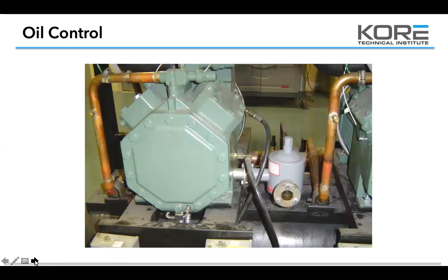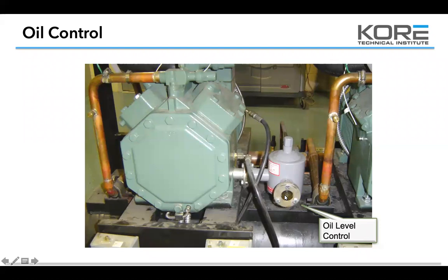For the oil separator oil level control — this is a mechanical float — the nut at the very top is where you make your adjustment, and it usually has a sticker on the side telling you exactly how to adjust it. We like to see about a half a sight glass of oil with Copeland's. You can get down to about a third, but no more than three-quarters. Start pushing past that and you're either starving or pumping oil. Ideally you want to see right in the middle of that sight glass. When checking your oil, look at level and also color — it should be a nice light brown. If it's POE or a synthetic it should be almost clear.